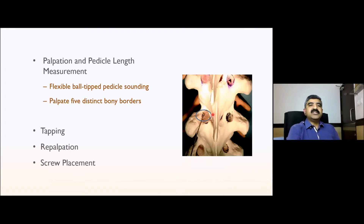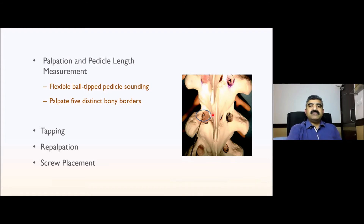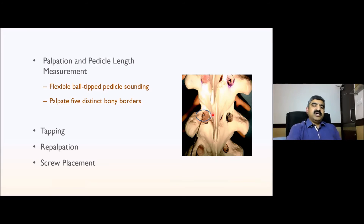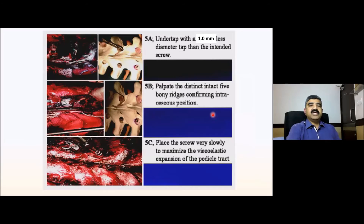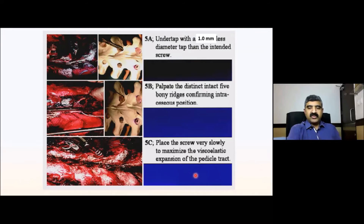Use a flexible ball-tip pedicle probe or pedicle sound to make sure you have not breached any of the walls. You must palpate five distinct bony borders: superior, inferior, medial, lateral, and anterior. The anterior wall gives you the depth of the screw. I use a tap and then re-palpate using the probe to confirm no wall breach, then the screw is placed. We usually under-tap by one millimeter less, then palpate again and place the screw slowly to use the viscoelastic expansion of the pedicle to our benefit.